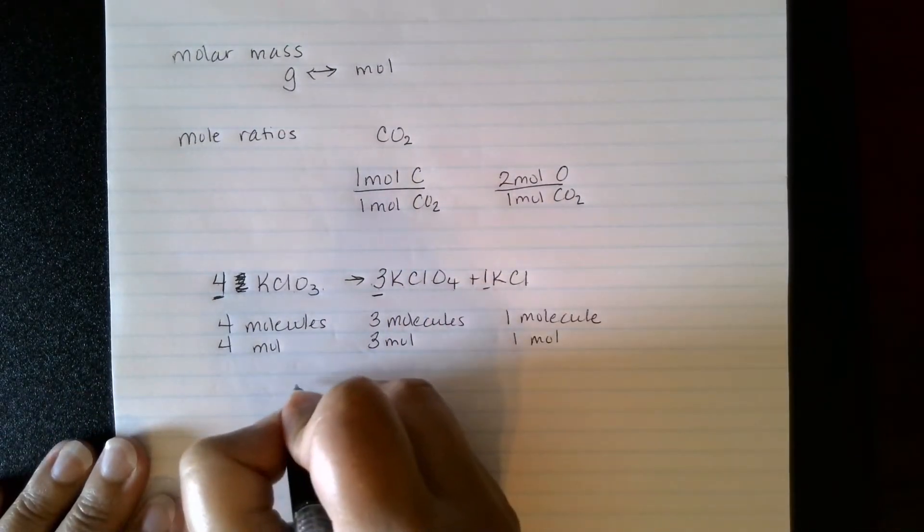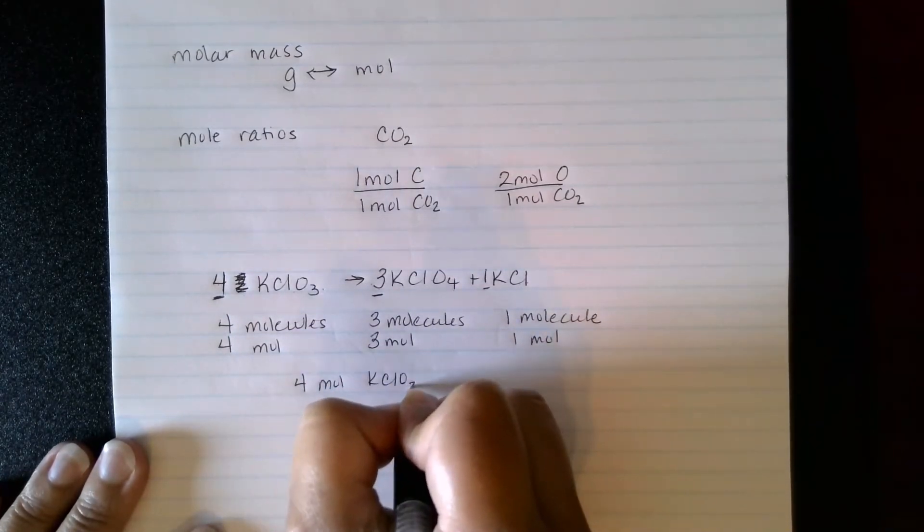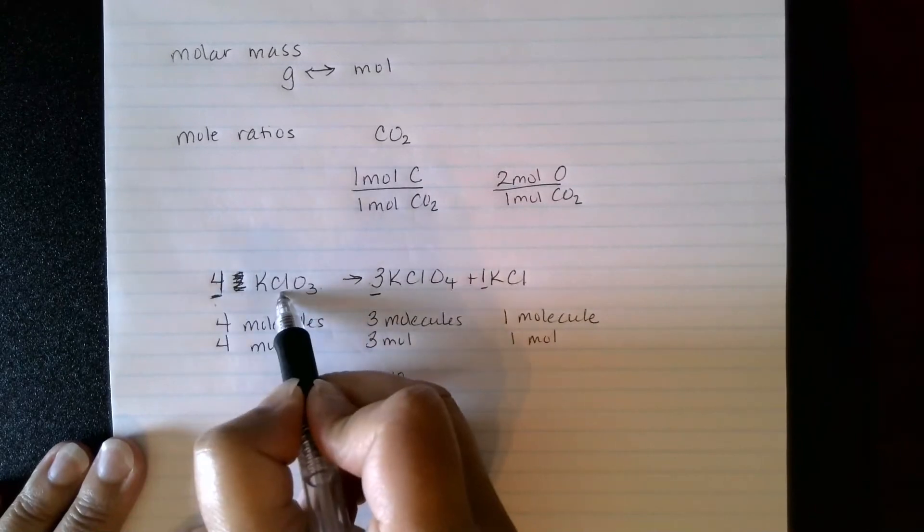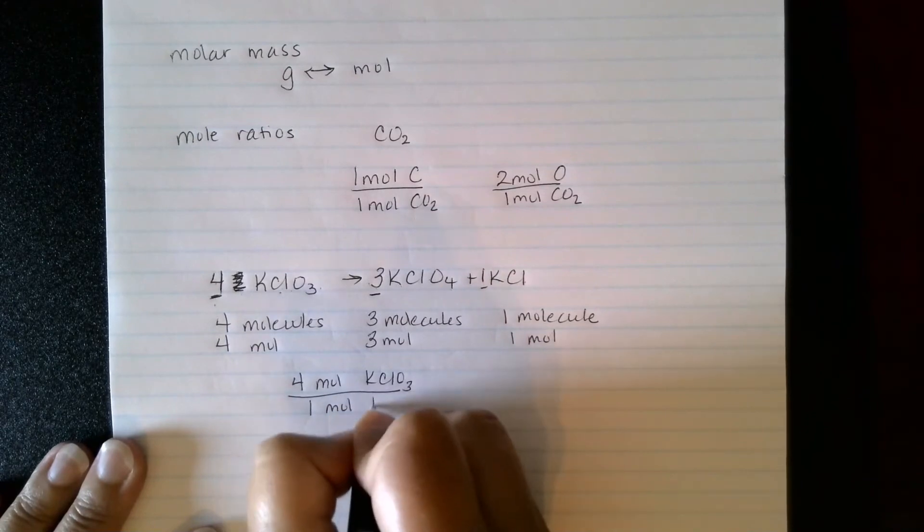For example, I could say that four moles of KClO3, so four moles of that, is to one mole of KCl.